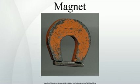A permanent magnet is an object made from a material that is magnetized and creates its own persistent magnetic field. An everyday example is a refrigerator magnet used to hold notes on a refrigerator door.